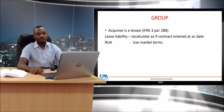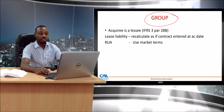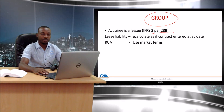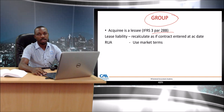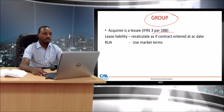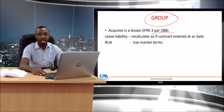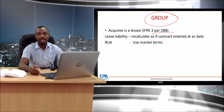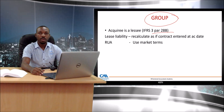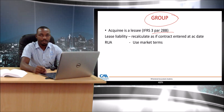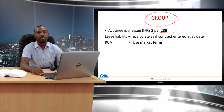Group accounting is a highly examinable area — you need to watch out for this. It is addressed in IFRS 3, paragraph 28b. You need to understand what happens in a business combination where the acquiree is the lessee in a lease. When the acquirer acquires an acquiree already in a lease, on day one from a business combination perspective, all net assets must be at fair value.